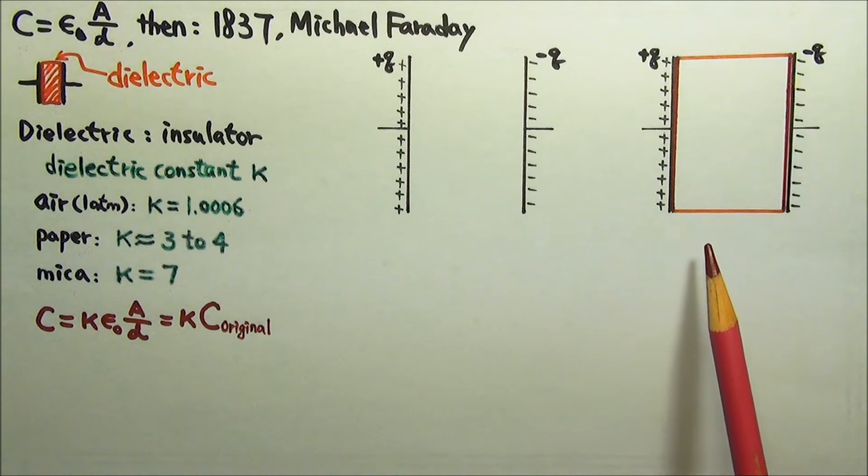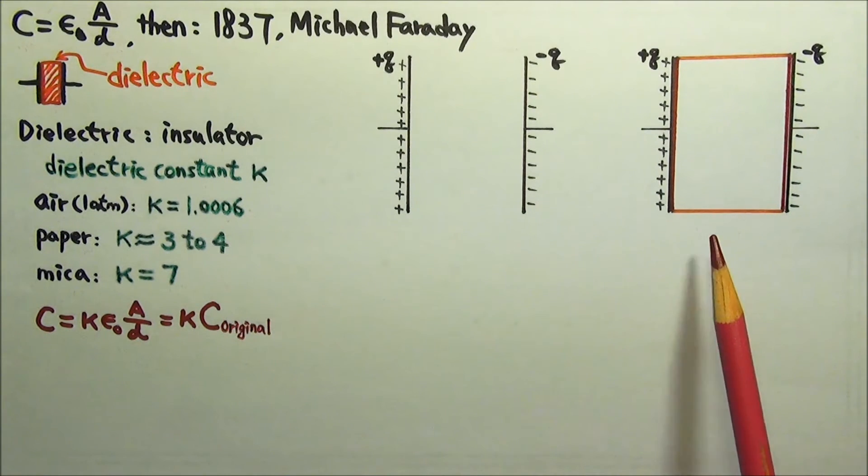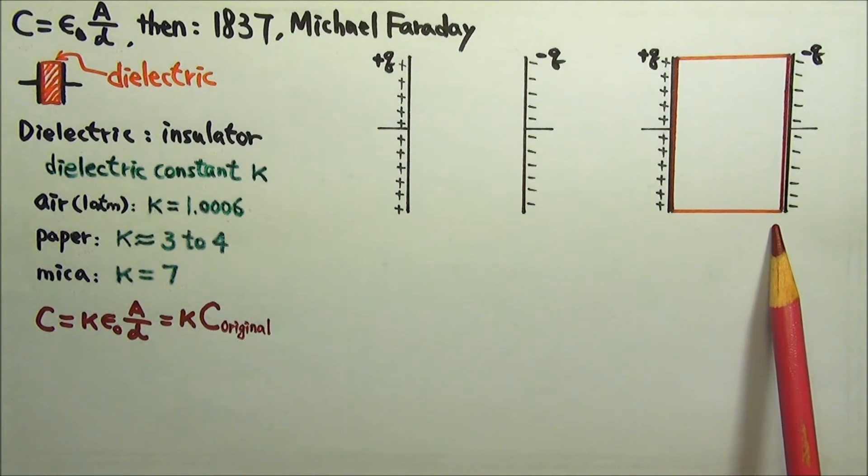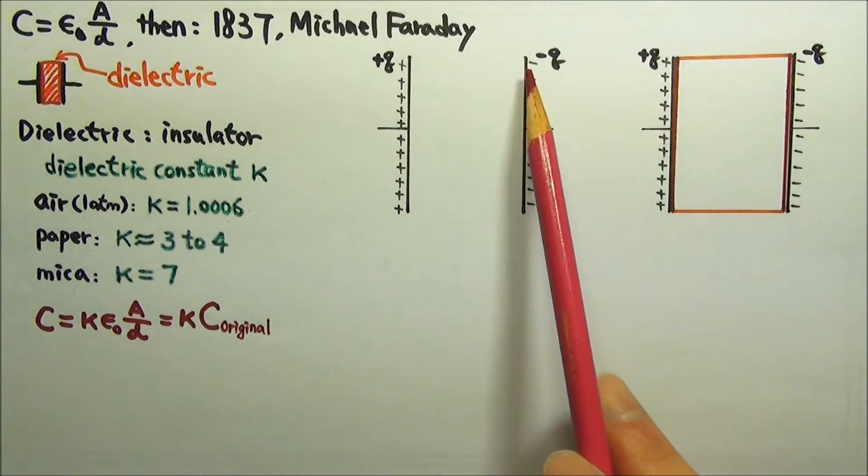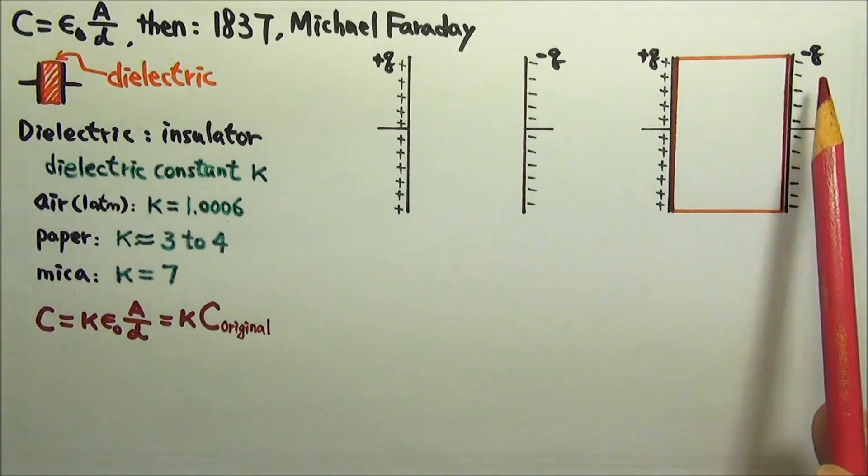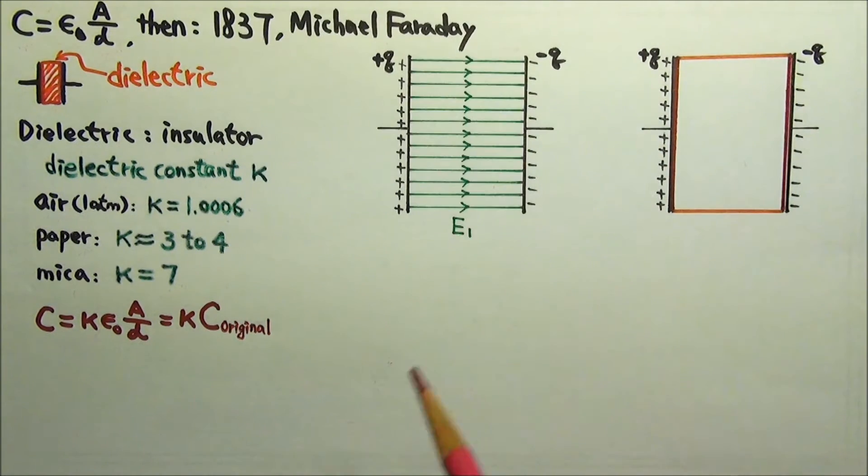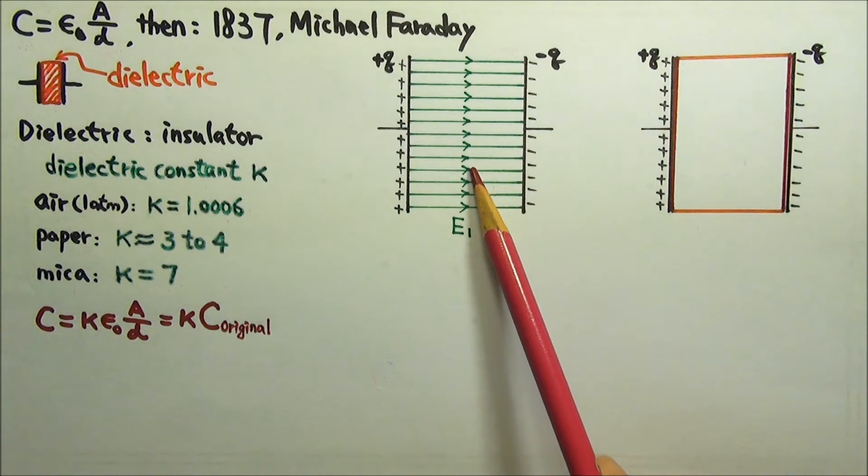Let's compare two identical sets of parallel plates with the same plate area and the same plate separation. Each set has one plate with positive q and one plate with negative q, the same amount of q. The first set has vacuum in between and a uniform electric field E1 here.